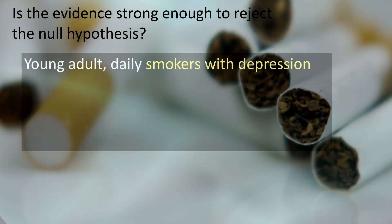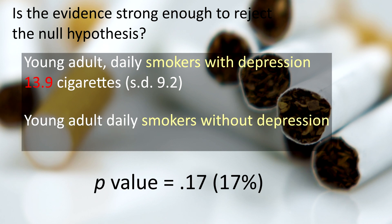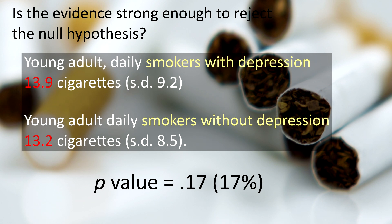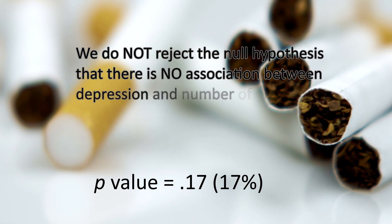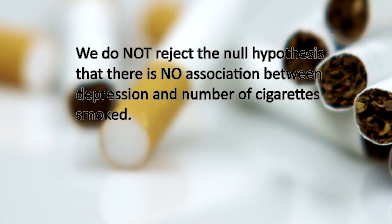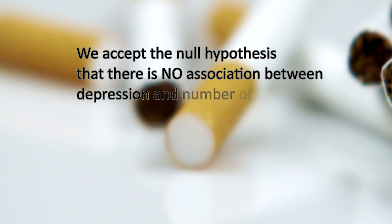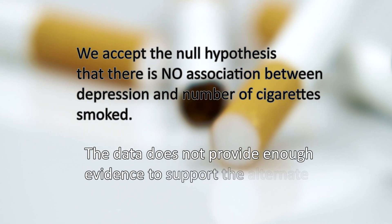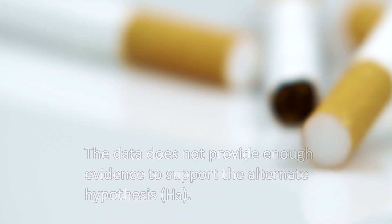Looking at the p-value in our example, we see that there is not adequate evidence to reject the null hypothesis because the p-value was 0.17, which is definitely greater than 0.05. In other words, we do not reject the null hypothesis that there is no association between depression and number of cigarettes smoked among daily young adult smokers. We accept the null hypothesis that there is no association between smoking and depression, because the data does not provide enough evidence to accept the alternate hypothesis.